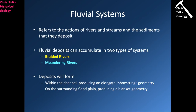Fluvial systems refer to the actions of rivers and streams and the sediments they deposit. Fluvial deposits can accumulate in two main types: braided river systems and meandering river systems. Deposition within the channel produces an elongate shoestring geometry, typically filled with sandy sediments and some gravel. Deposition on the floodplain either side is deposited as sheets — a blanket geometry — dominated by clays and silts with a little sand. The channel and floodplain have distinctly different textures and compositions.